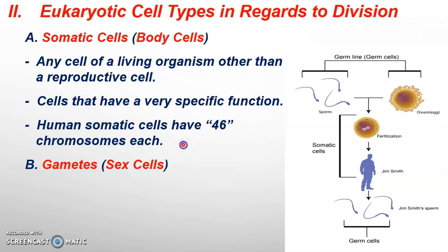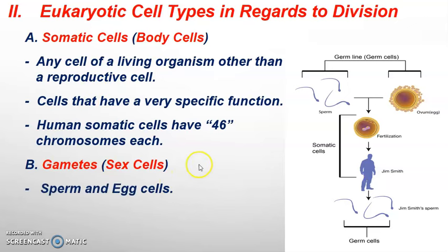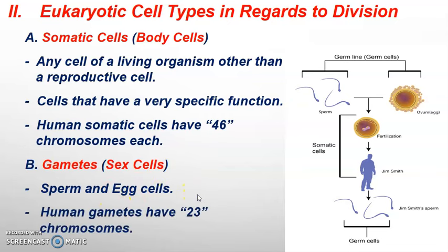So in every one of our body cells, we have a total of 46 chromosomes. Sperm or egg would only have 23, because in sexual reproduction each parent contributes half the genetic information that turns into an actual human. Gametes, or sex cells, in contrast, are only going to be sperm and egg, and they will have 23 single chromosomes in them.